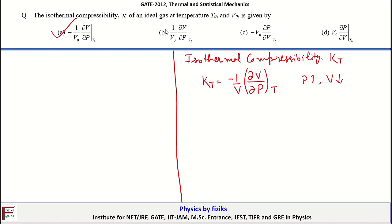Option A is the correct one here. Similarly, we can also define the adiabatic compressibility. In an adiabatic process, which is isentropic — a reversible adiabatic process — adiabatic compressibility is given by minus (1/V)(dV/dP), but now the constraint will be of constant entropy.